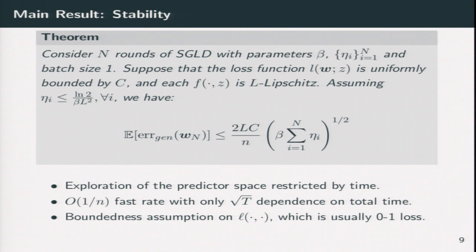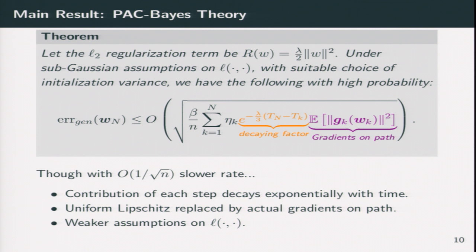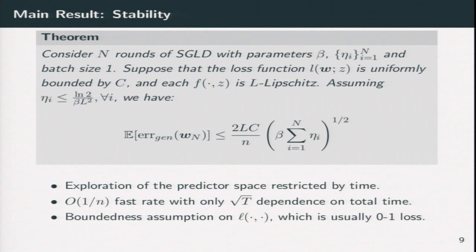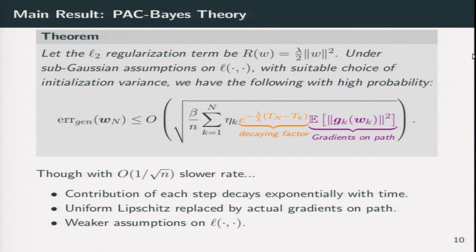And our PAC-Bayes bound is different from the stability bound in a few points. The first thing which is bad is that we achieve only one over square root N rate. But the good news is that, first, you can remember that in previous bounds, we have some dependence on Lipschitz parameter which can be really large. But here we replace it by basically the gradient you take along the path. And the second thing is that the contribution from each step is decaying exponentially and the decay factor depends on your L2 regularization.